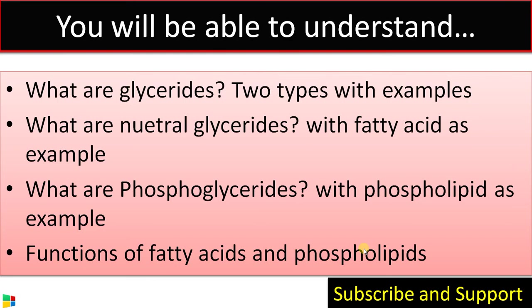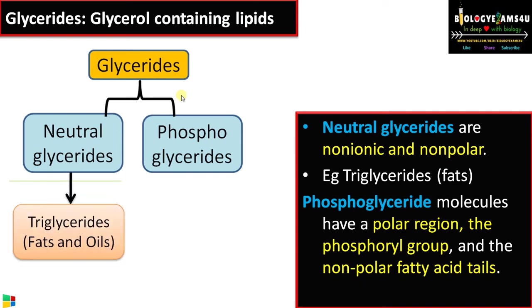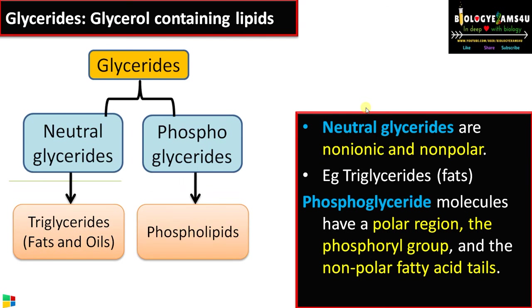As the term indicates, glycerides are glycerol-containing lipids. Glycerides can be broadly classified into neutral glycerides and phosphoglycerides. Neutral glycerides, such as fats and oils or triacylglycerides, are nonionic and nonpolar. Phosphoglycerides — the classical example being phospholipids — have a polar region or a phosphate-containing head group and a nonpolar fatty acid tail. We'll be discussing the structure in detail.